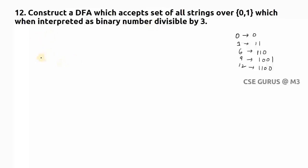Starting from initial state q0, we need 3 states: a 0-remainder state, a 1-remainder state, and a 2-remainder state — because when dividing by 3, only 3 possible remainders exist. So q0 is the 0-remainder state, q1 is the 1-remainder state, and q2 is the 2-remainder state.